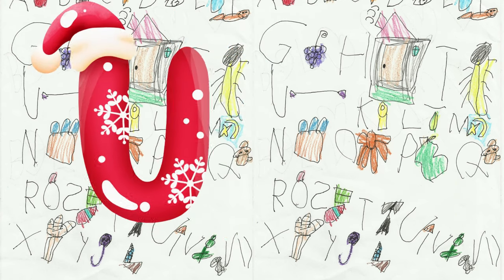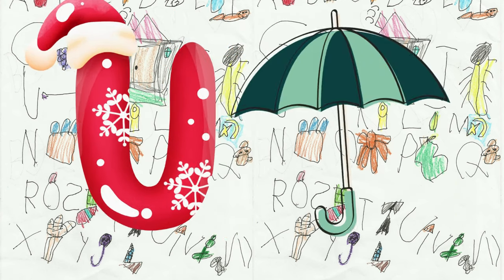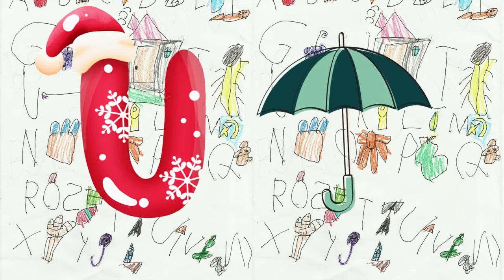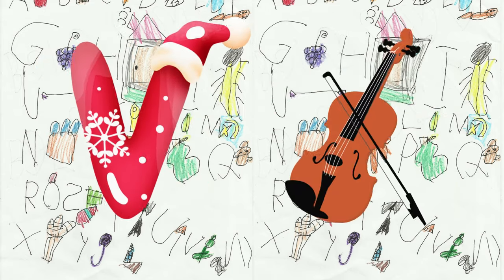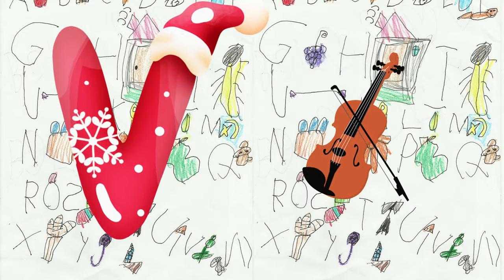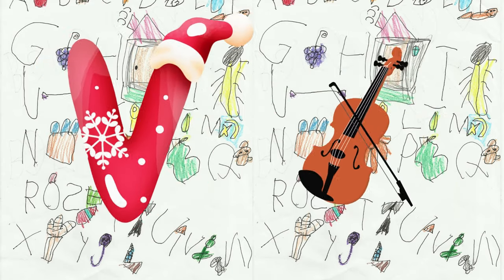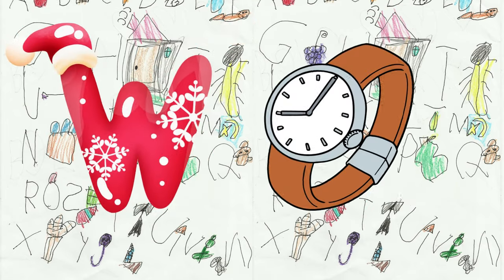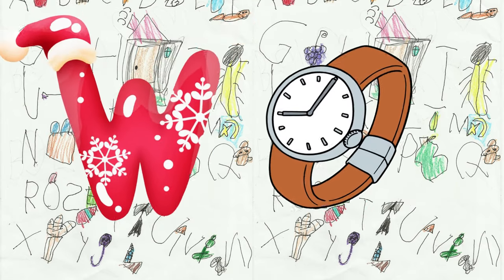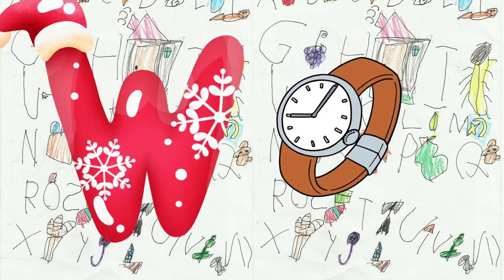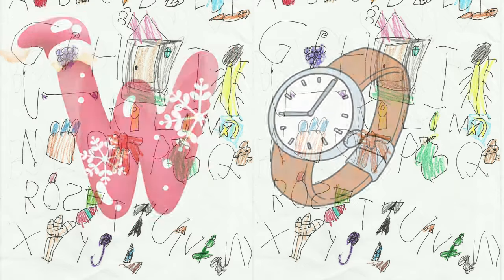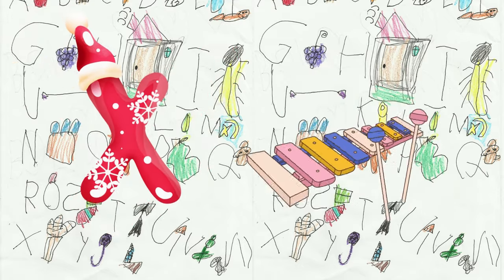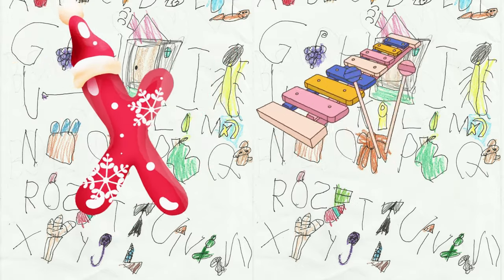U is for umbrella, u-u-umbrella. V is for violin, v-v-violin. W is for watch, w-w-watch. X is for xylophone, z-z-xylophone.